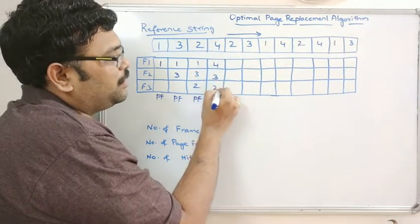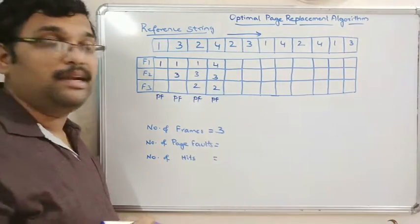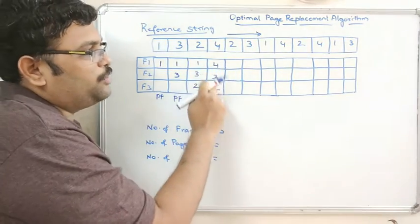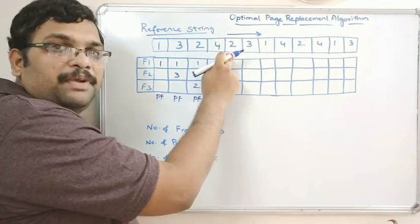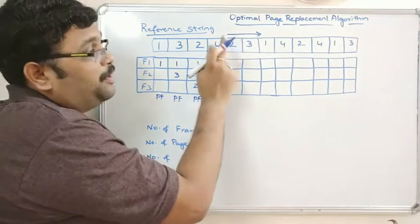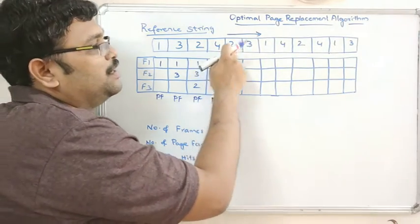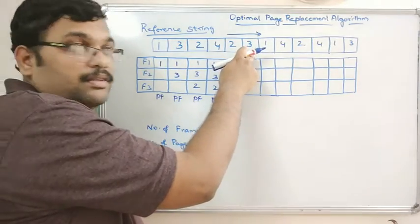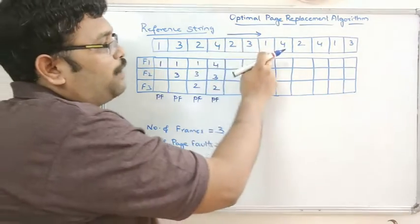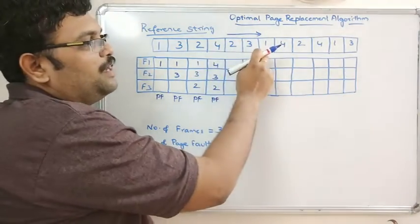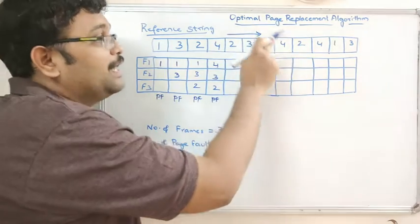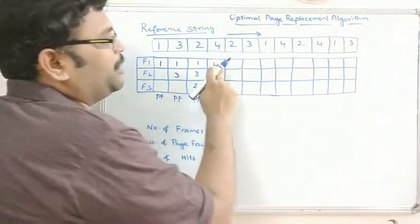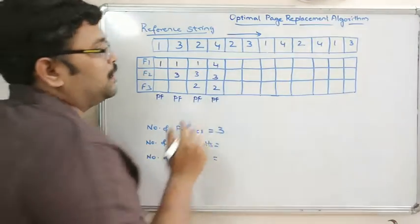Among the three pages in memory — 1, 3, and 2 — page 2 is the most immediate next reference, page 3 follows shortly, and page 1 must wait through two pages before being needed again. So page 1 is replaced with page 4.